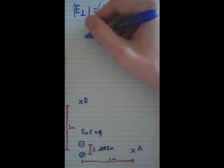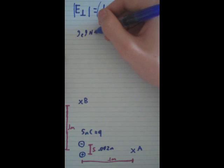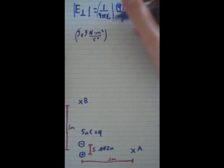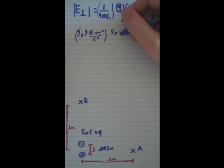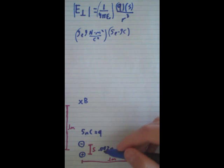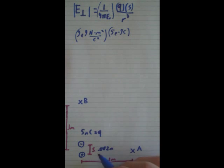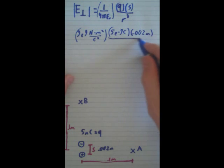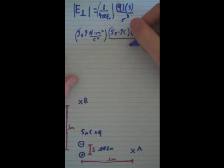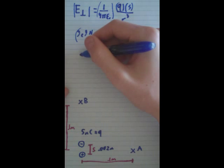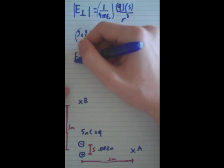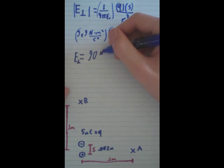This constant here is always 9E to the 9th newton meters squared per coulombs squared. Q is 5 nanocoulombs, which we have to convert to coulombs, so this will be 5E to the negative 9th coulombs. S, which is our distance between the two dipoles, in this case is 2 nanometers, which is already in meters right here, so 0.002 meters. And all that over the distance cubed. The distance here is 0.1 meters, so it's already in our standard unit, so we just say 0.1 cubed. Once we calculate this all out, your E perpendicular will be 90 newtons per coulomb.